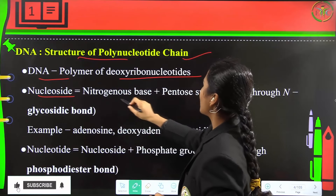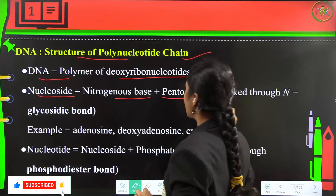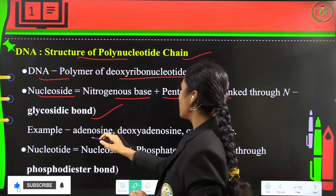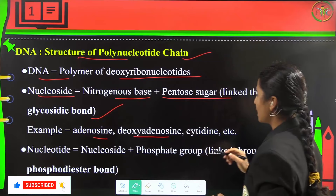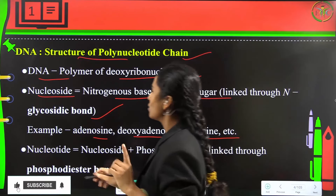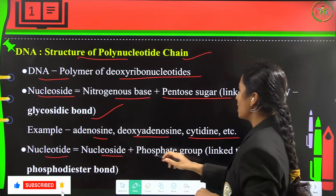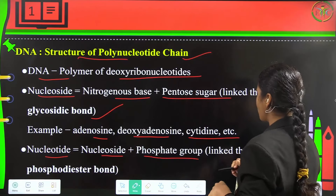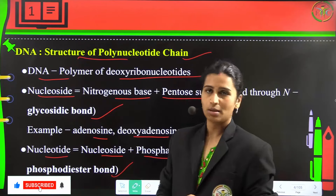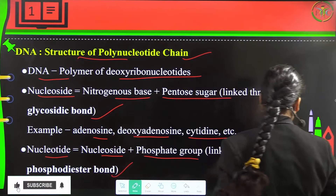A nucleoside is a nitrogenous base plus pentose sugar, which is linked with an N-glycosidic bond. Examples include adenosine, deoxyadenosine, and cytidine. A nucleotide is a nucleoside plus a phosphate group, which is linked through a phosphodiester bond. There is a difference between nucleoside and nucleotide — please remember.